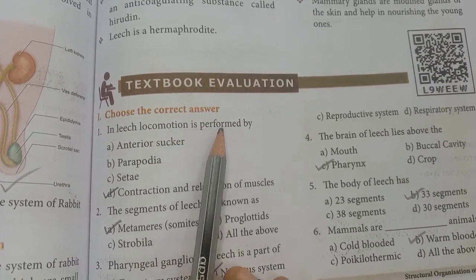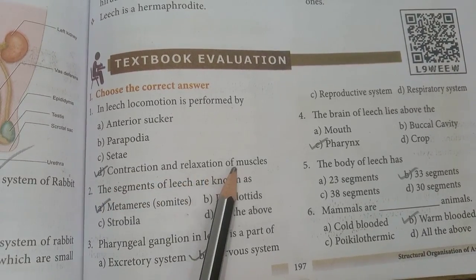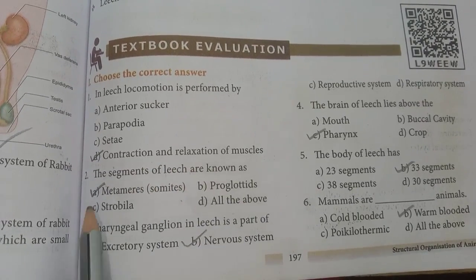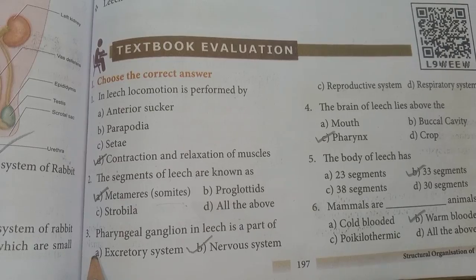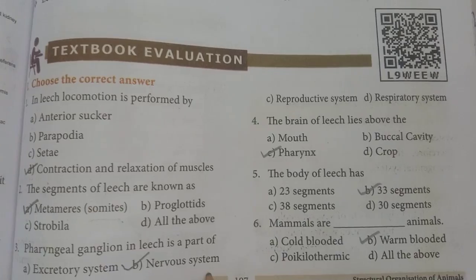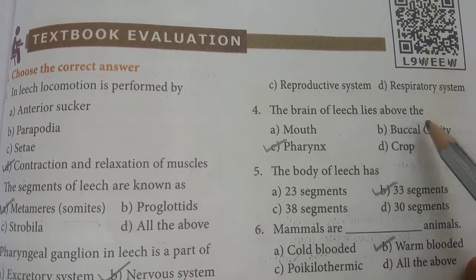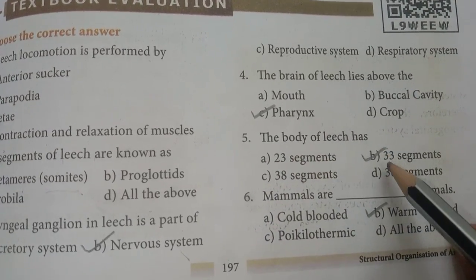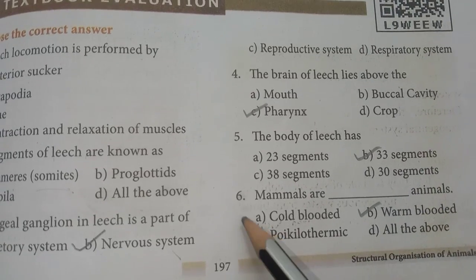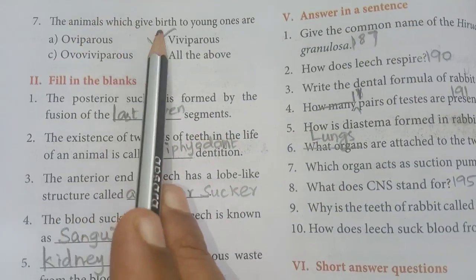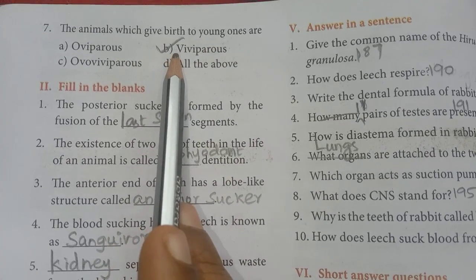Question 1: In leech, locomotion is performed by contraction and relaxation of muscles — option D is the right answer. Question 2: The segments of leech are known as metamers/somites — option A is the right answer. Question 3: Pharyngeal ganglion in leech is a part of the nervous system — option B. Question 4: The brain of leech lies above the pharynx — option C. Question 5: The body of leech has 33 segments — option B. Question 6: Mammals are warm-blooded animals — option B. Question 7: The animals which give birth to young ones are viviparous — option B.